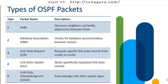Type 5 is the Link State Acknowledgement. The LS ACK is able to acknowledge every other OSPF packet type except for a Hello. You don't ACK a Hello, and you don't ACK an ACK — that would create an endless acknowledgement loop going back and forth. So link state acknowledgements are used for acknowledging packet types that aren't Hellos and aren't acknowledgements.